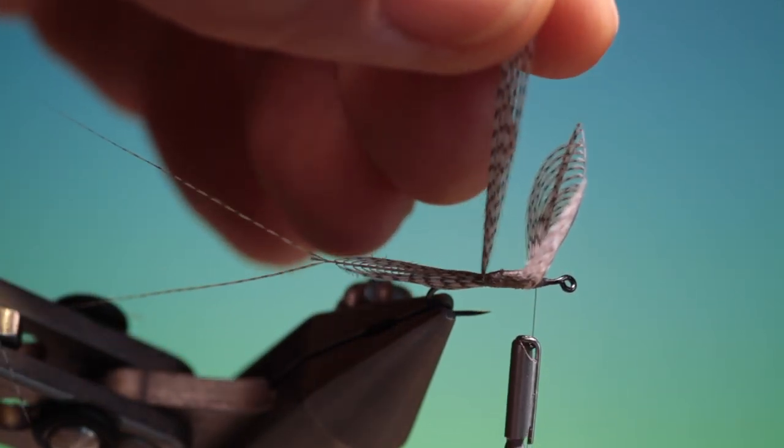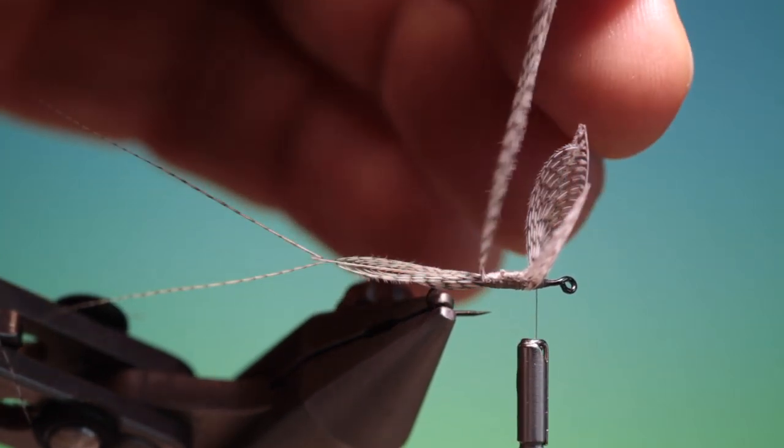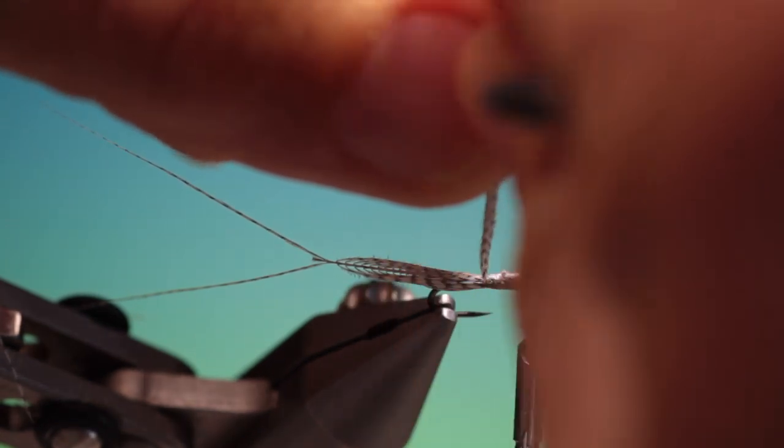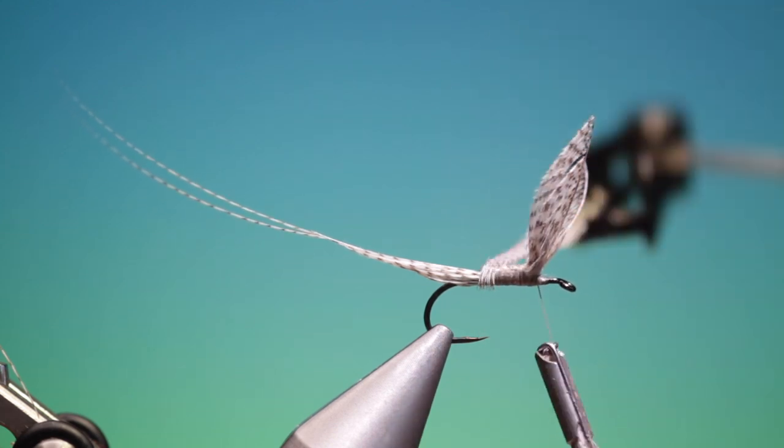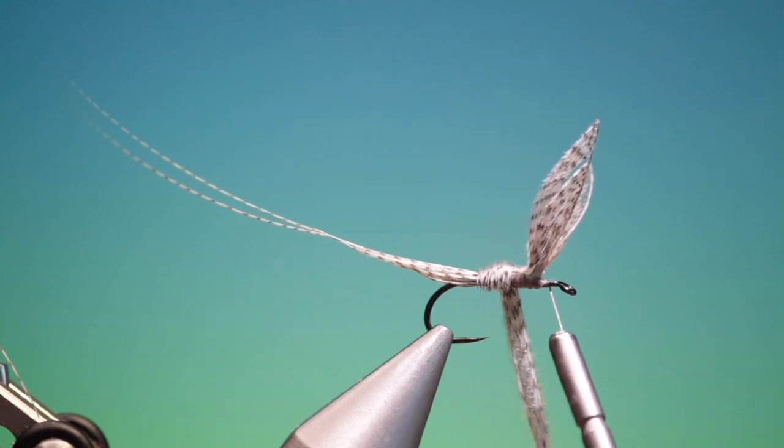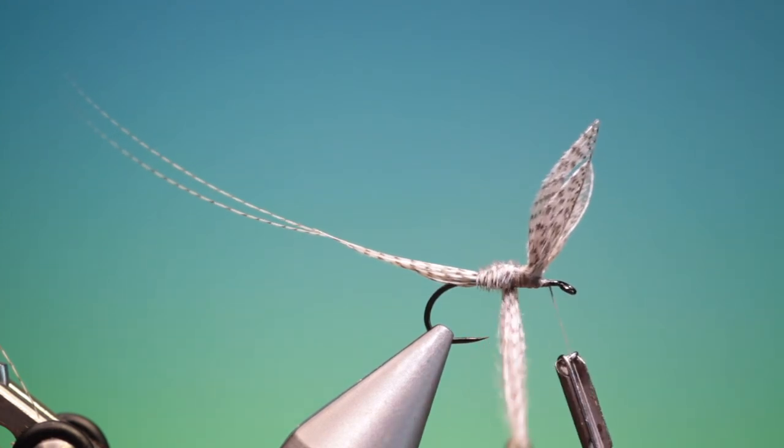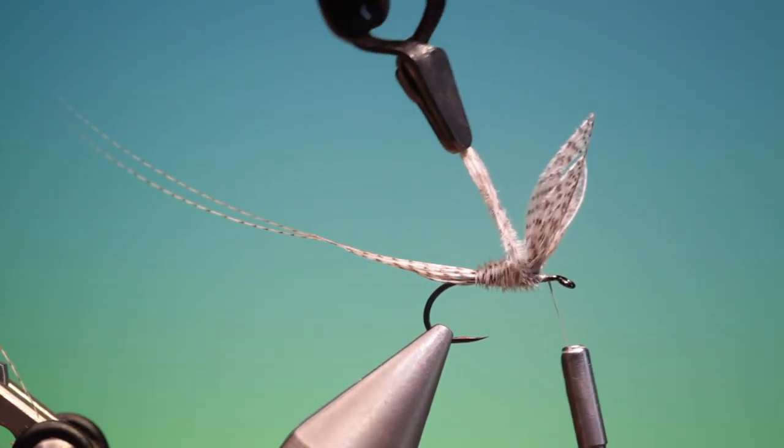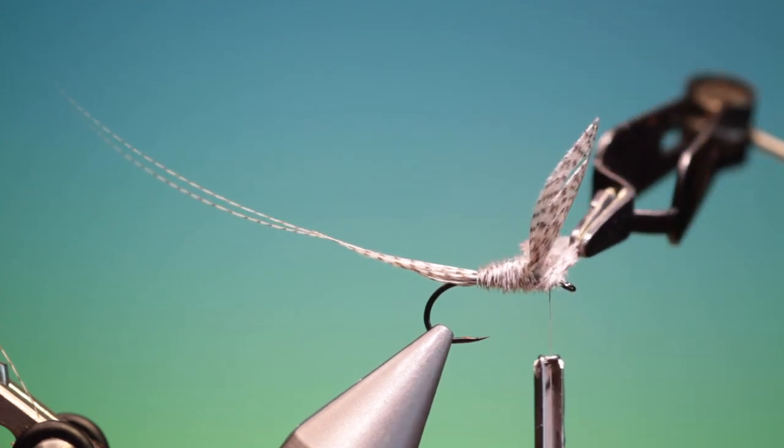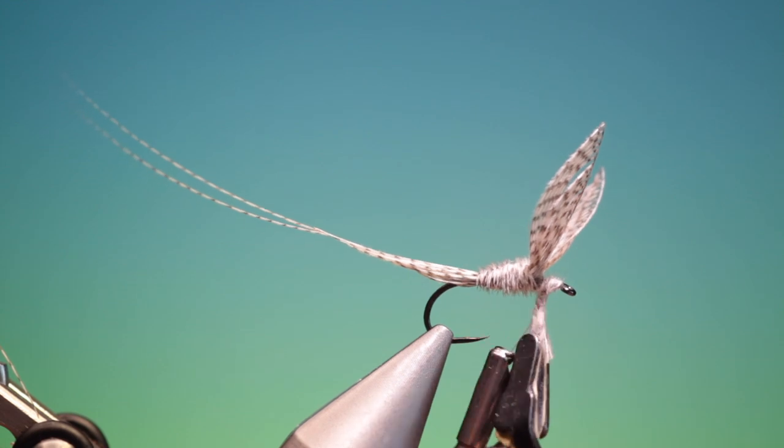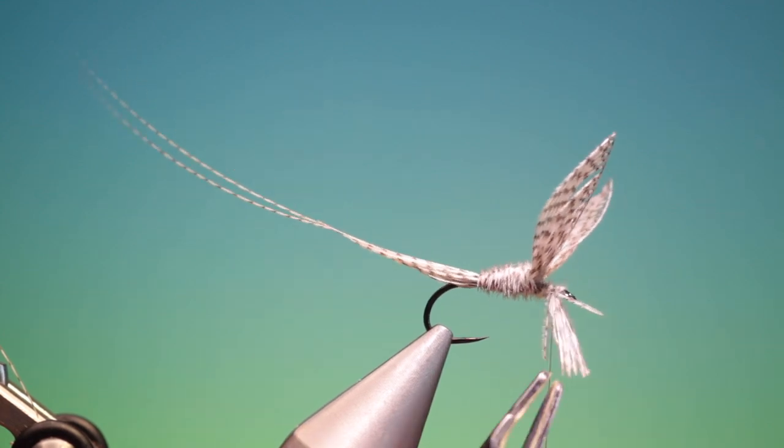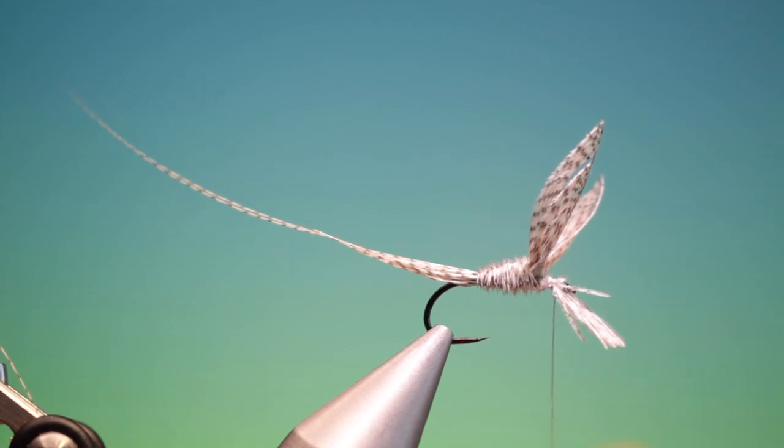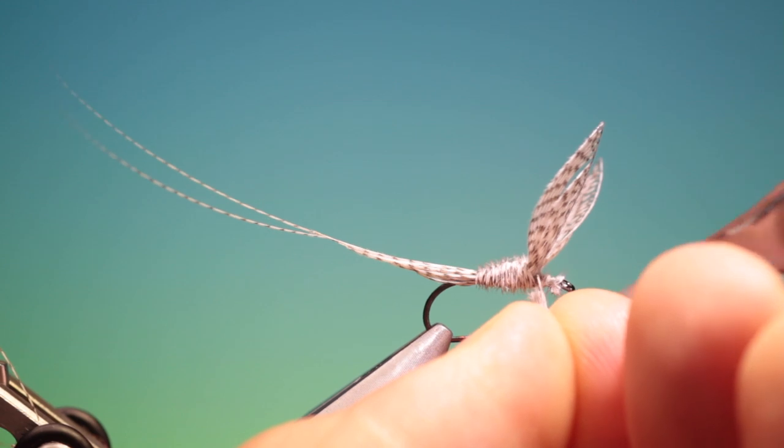Good. Then we'll take our hackle plier and the fibres we put on. Like so. Wrap these forward, swap that around, tie that off, and remove the ends.